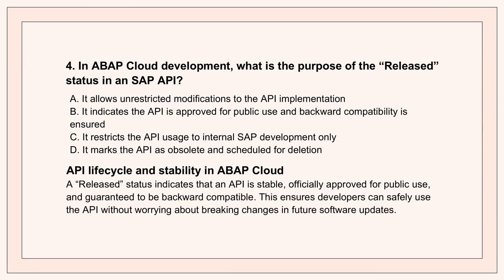Let's pivot to the ABAP Cloud environment, which has its own set of rules and focus on stability. Thinking about APIs — what's the significance when an SAP API is marked with a released status in ABAP Cloud? That release status is critical. It means SAP has formally approved that API for public use, and crucially, it means the API is considered stable and SAP guarantees backward compatibility. It gives developers the confidence to integrate with that API, knowing SAP won't suddenly change it in a way that breaks their application in a future upgrade — it removes a major risk factor and underpins the stability you need for enterprise-scale cloud applications.